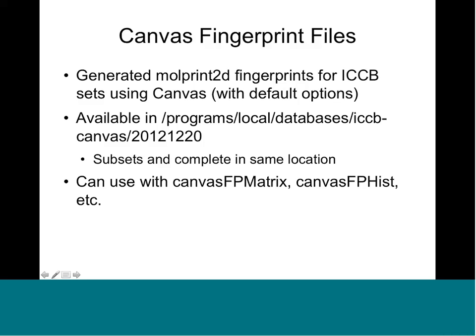Similar to where the LigPrep databases are, the Canvas fingerprints are in programs/local/databases/ICCB-Canvas and then the date. The complete set and subsets are in the same location because fingerprint files are quite small — unlike the gigabytes of data for LigPrep, the fingerprint files are only a few tens of megabytes. These files can be used directly with Canvas FPMatrix, FPHist, and related command-line tools. Because they're so small, you can easily copy them to your local machine.